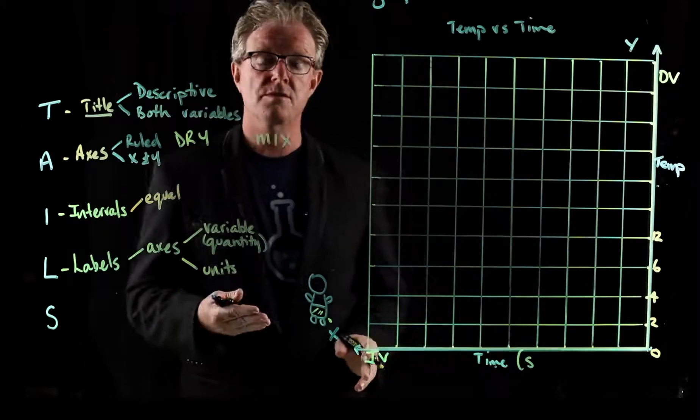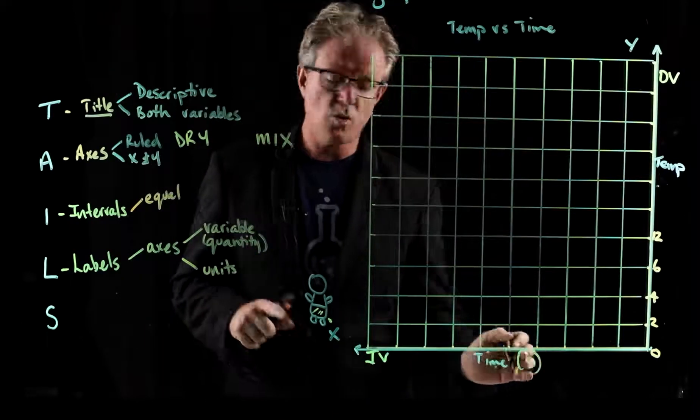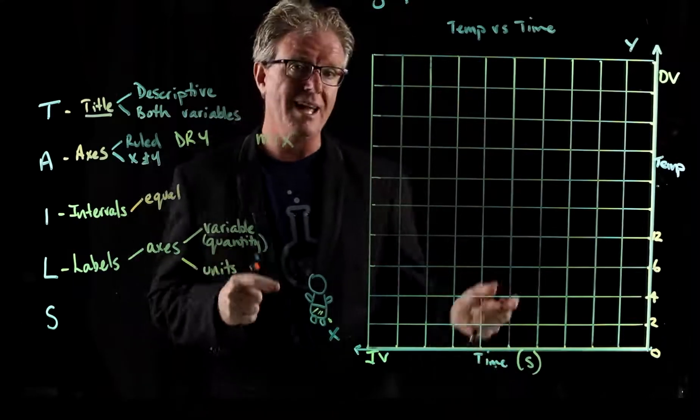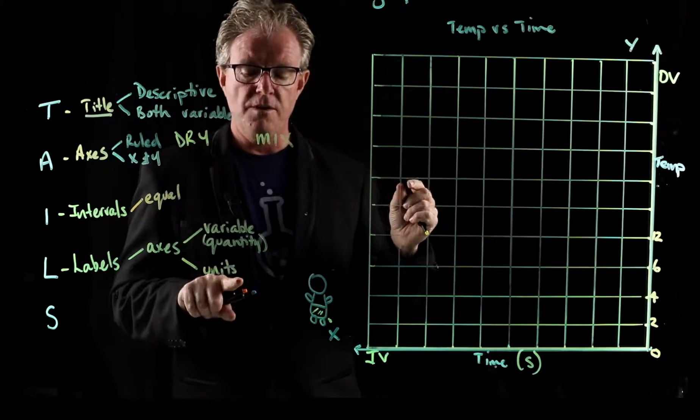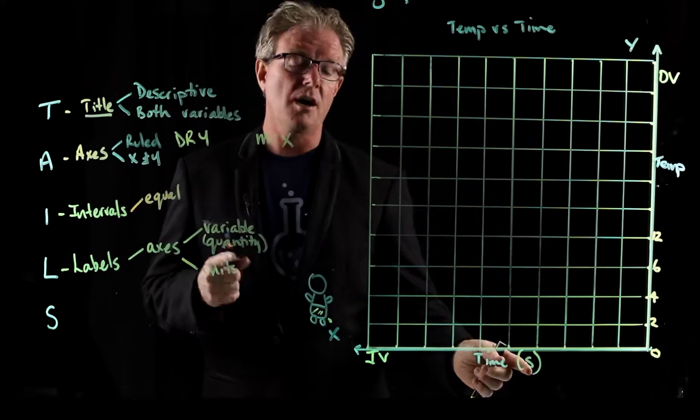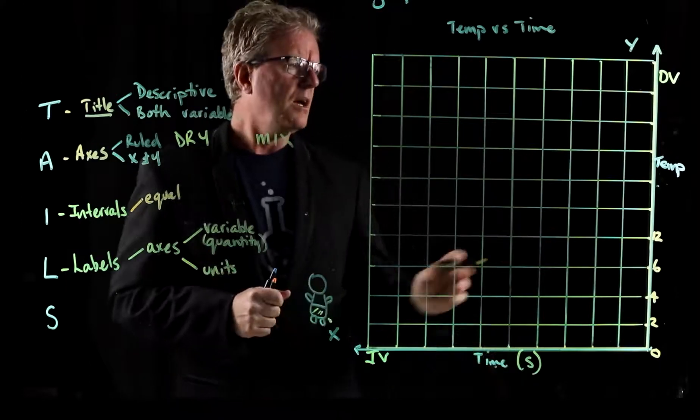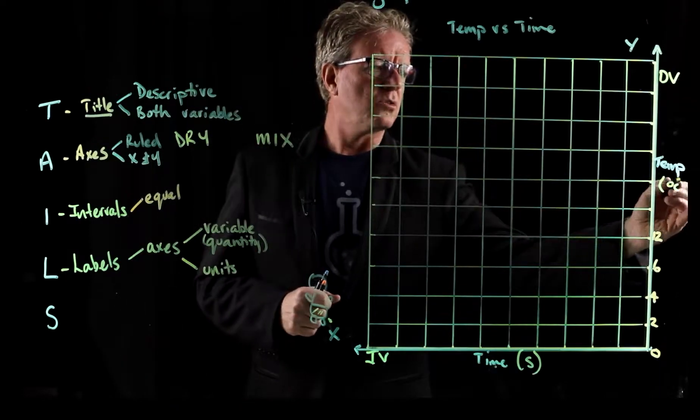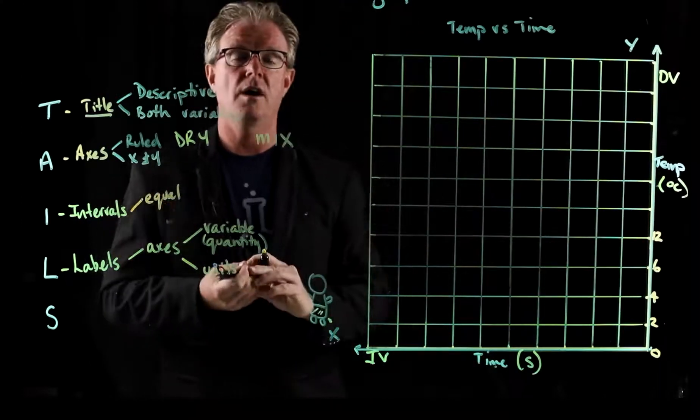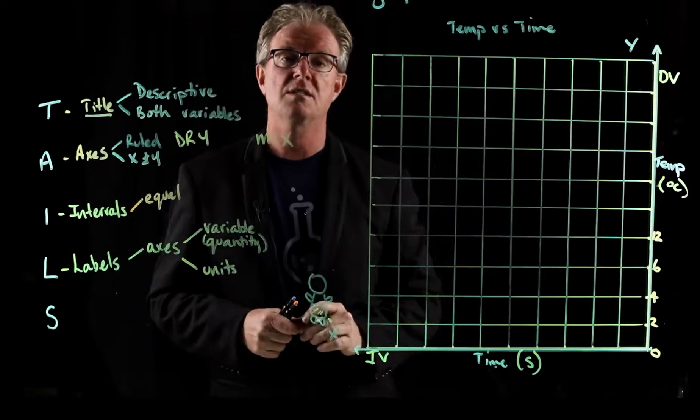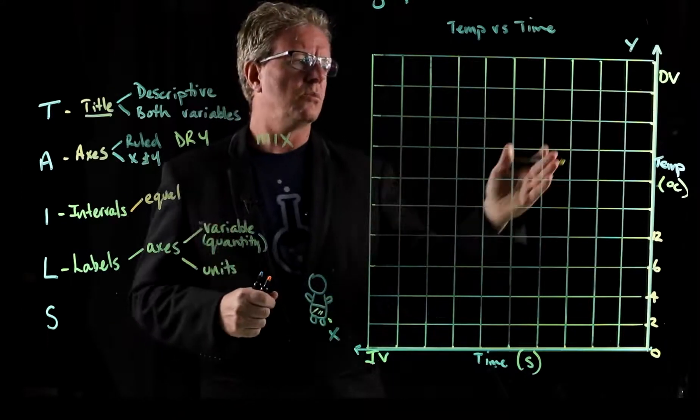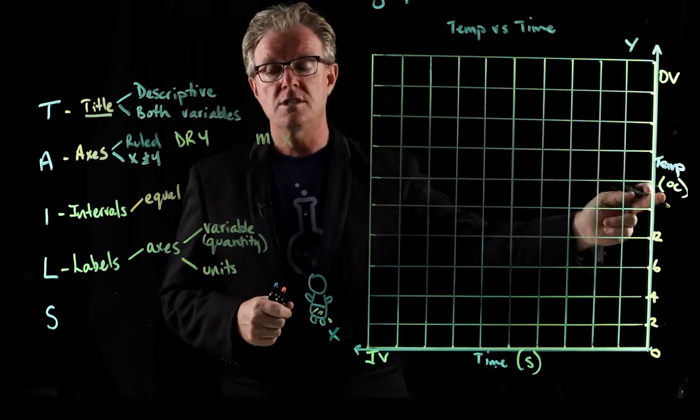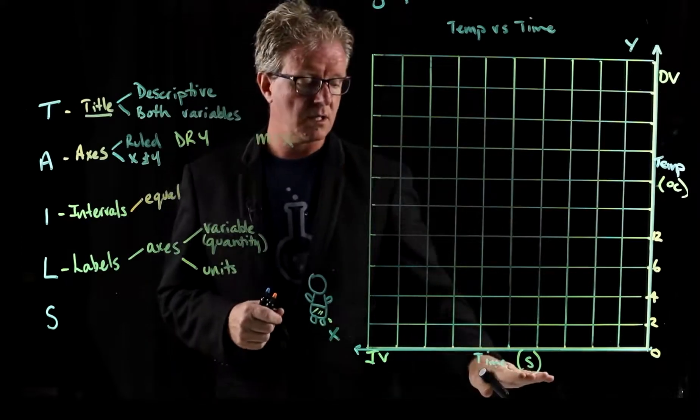So the quantity that we're measuring is time and the amount that we're using each time is seconds. What about temperature? Well, we could do degrees Celsius, degrees Fahrenheit, or we could do a temperature such as Kelvin. So we've got to make sure we have units in parentheses.